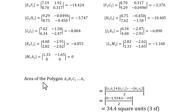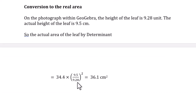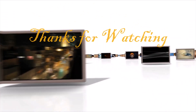Then the area of the polygon A1, B1, C1 to A1, using this formula, works out to 34.4 square units. We can convert these square units into a real area. On the photograph in GeoGebra, the height of the leaf is 9.28 units. The actual height of the leaf is 9.5 cm. Using this scaling formula, the actual area of the leaf is 36.1 cm². Thank you.